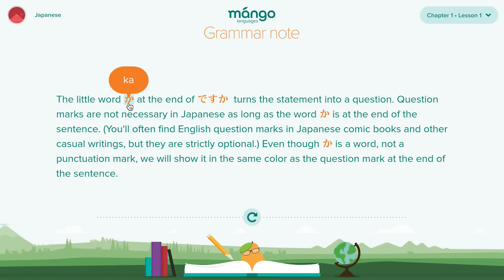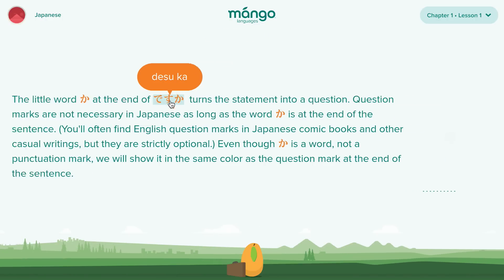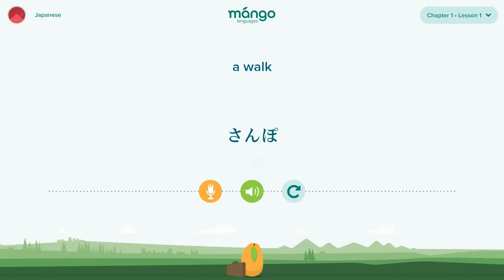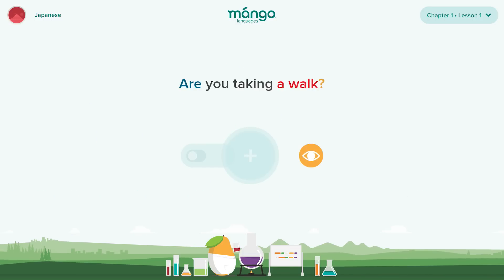Each note is interactive, and you can mouse over any highlighted word to reveal a phonetic pop-up, and click to hear the word or phrase again. At key intervals, there are critical thinking slides. These encourage you to start putting language together based on what you have learned and create something entirely new, all on your own.